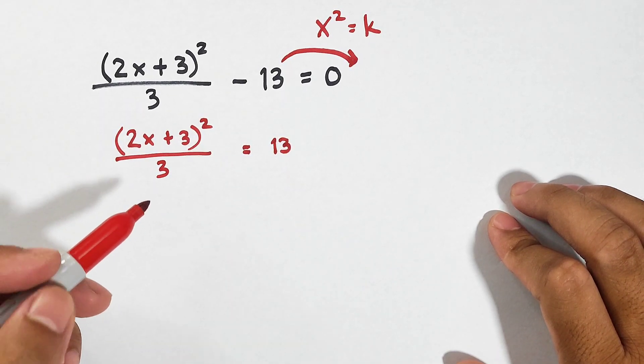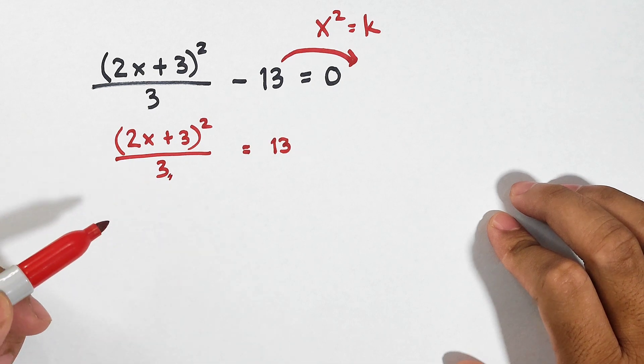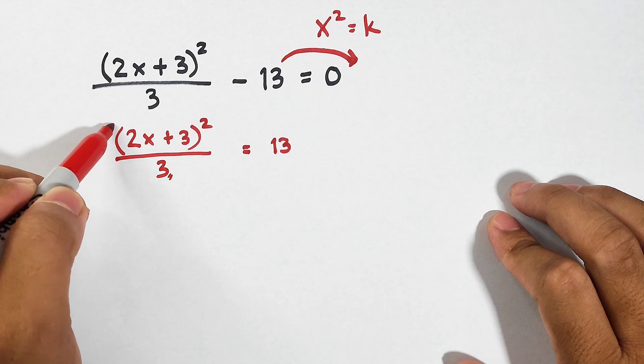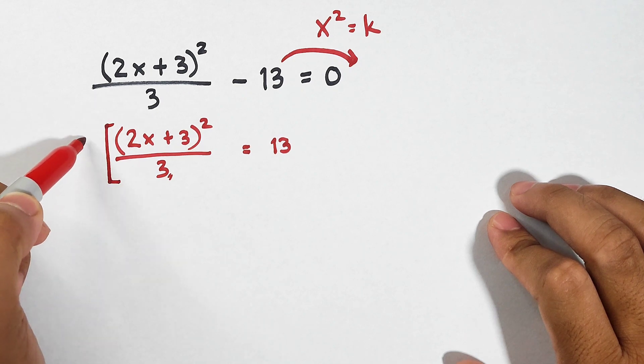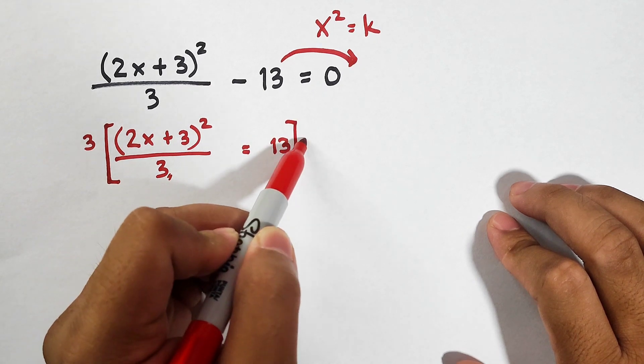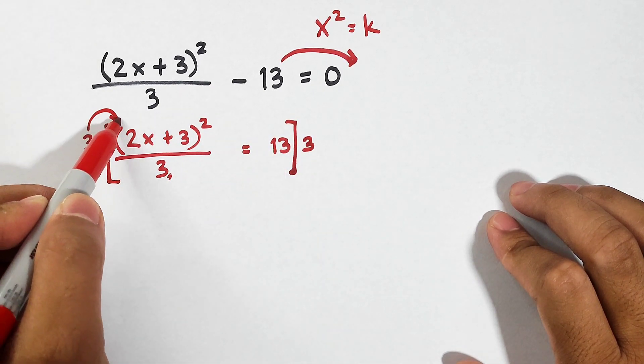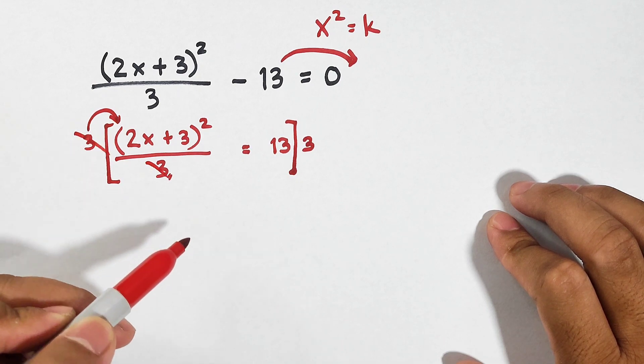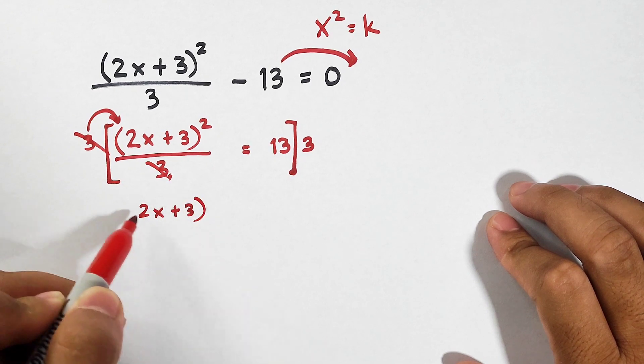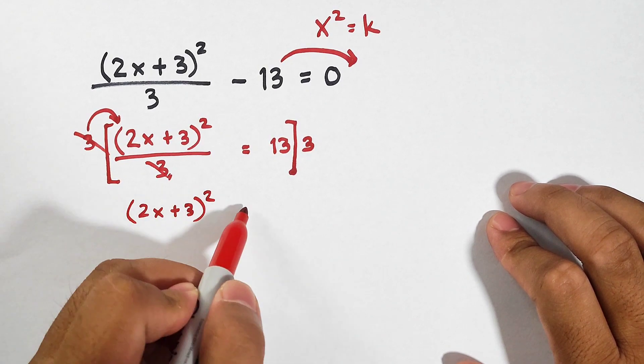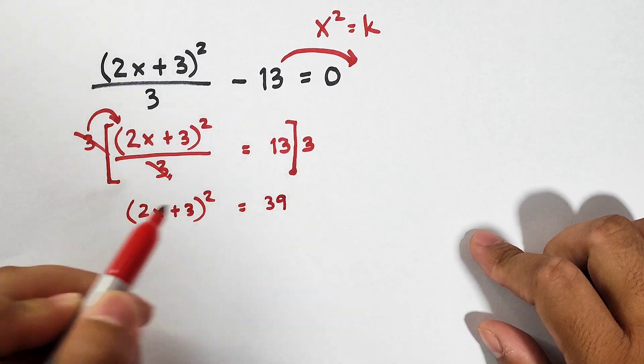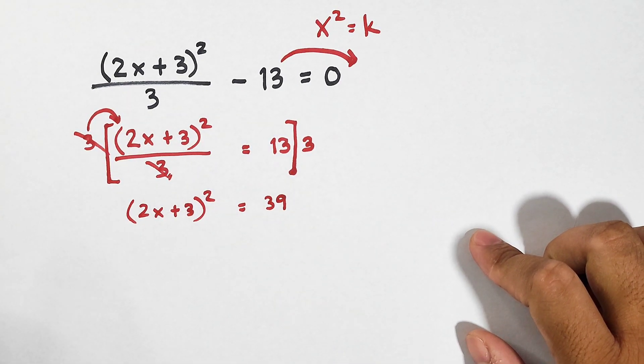And here, the main problem is the denominator 3. So what we need to do is to eliminate it by multiplying both sides of the equation by this denominator. When you multiply, it will be cancelled out. What remains is 2x plus 3 raised to the second power and on the other side, 13 times 3 is 39.